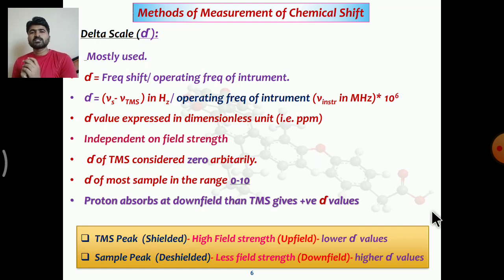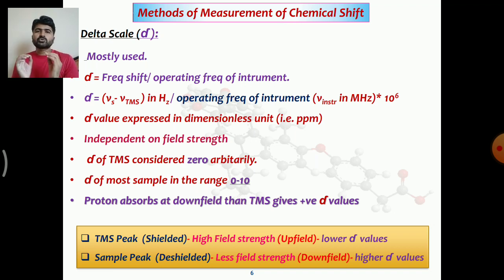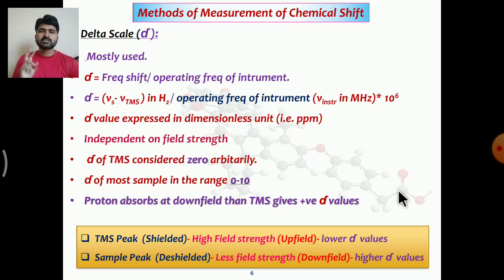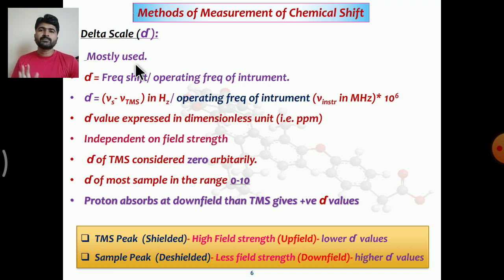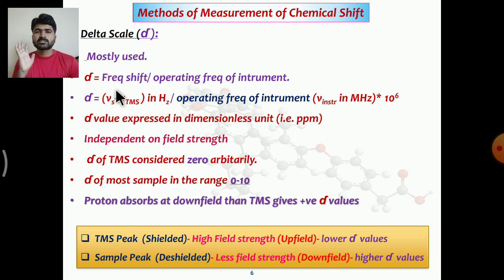There are two methods used to measure chemical shift: the delta scale and the tau scale. The delta scale is widely used and the most accepted. Delta equals the frequency shift divided by the operating frequency of the instrument in megahertz.